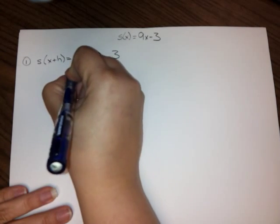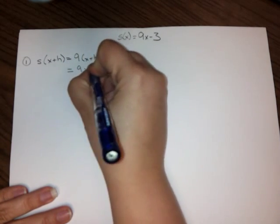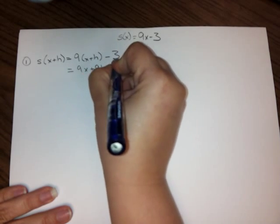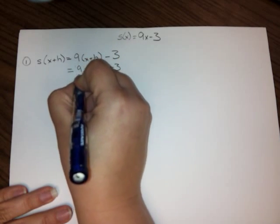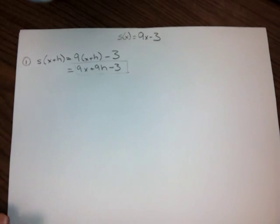I can distribute that 9. And this gives me step 1 of my four-step process.